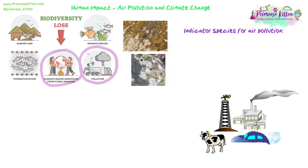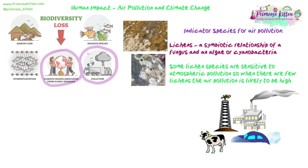We've talked about indicator species already. Remember, indicator species are species that are particularly sensitive to particular conditions. If they're present or absent, it can give you an indication of what the habitat is like in terms of pollution. The indicator species we use for air pollution are lichens.